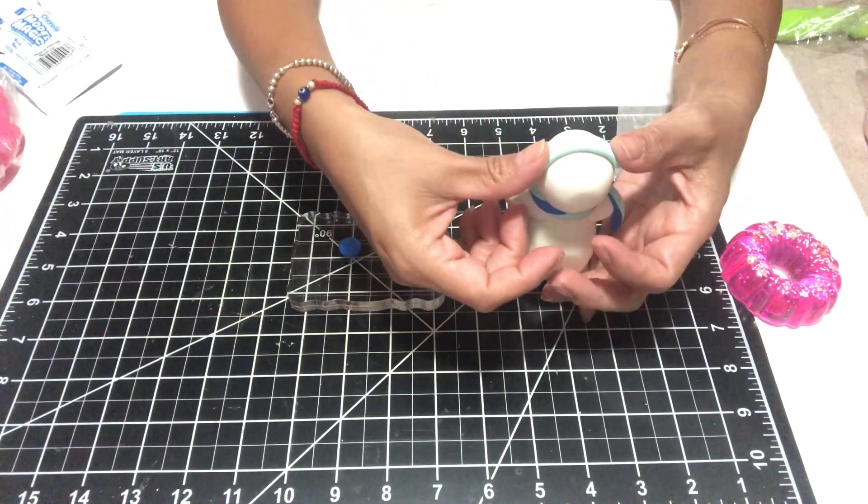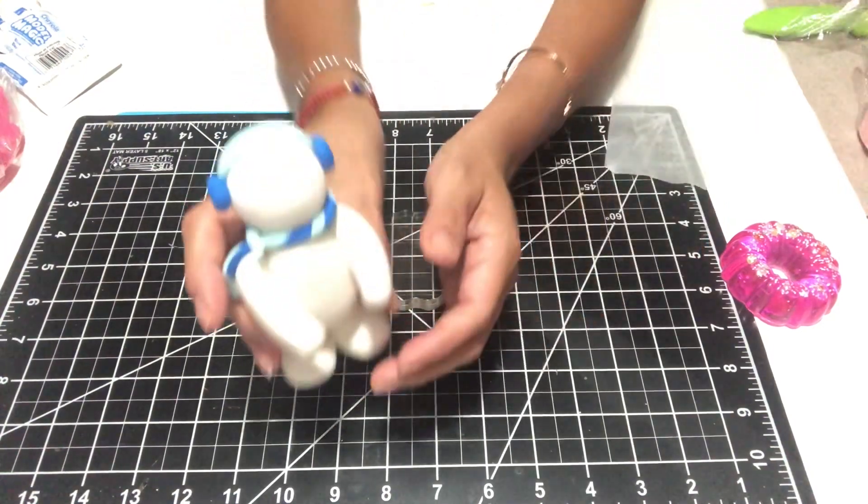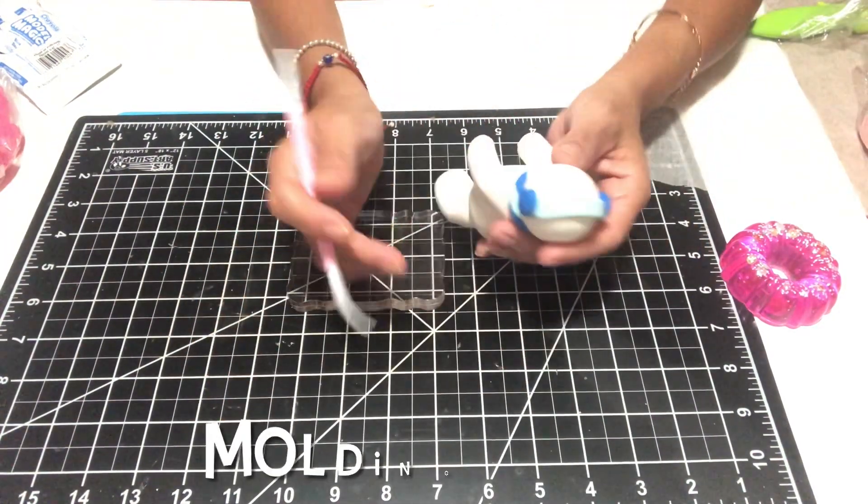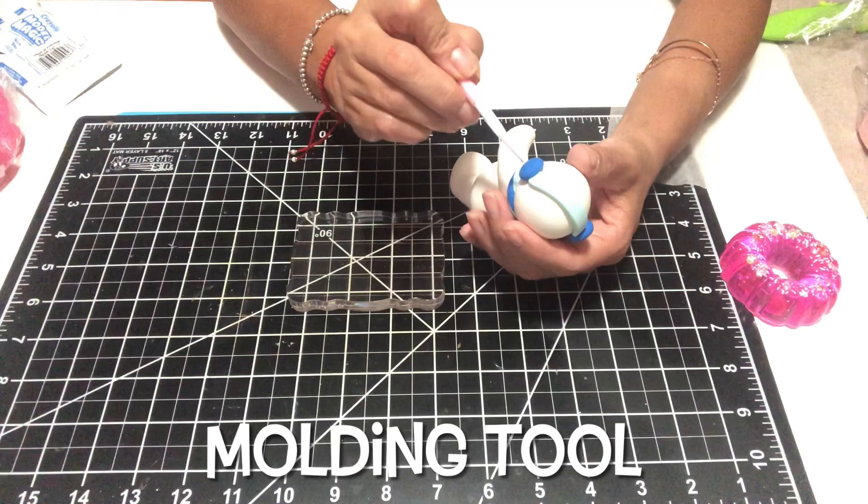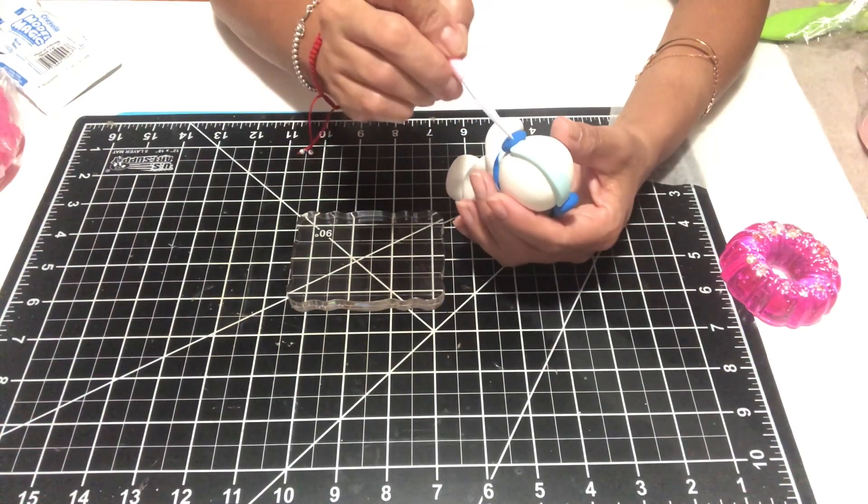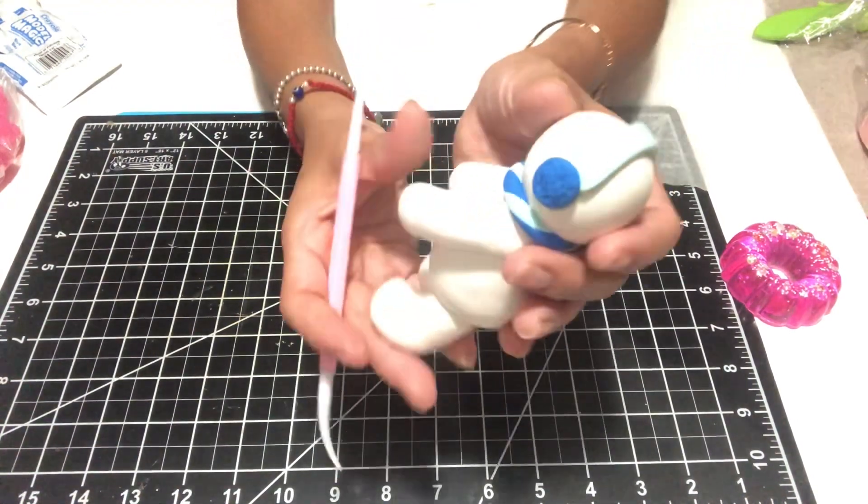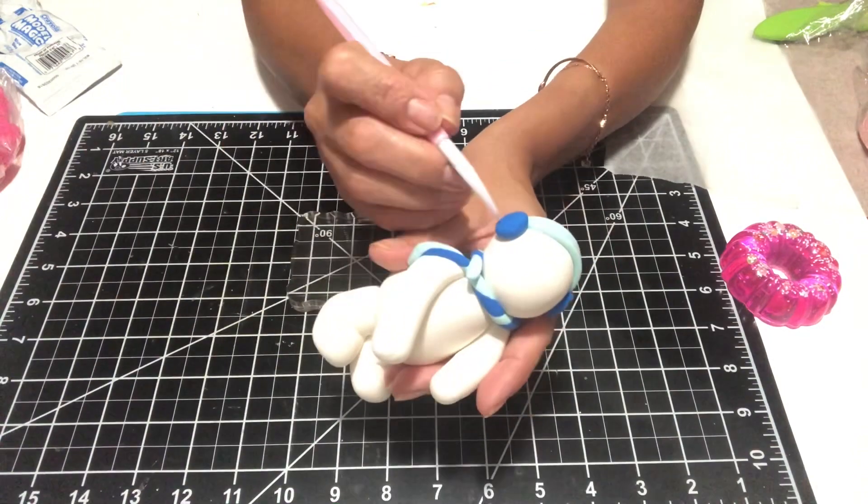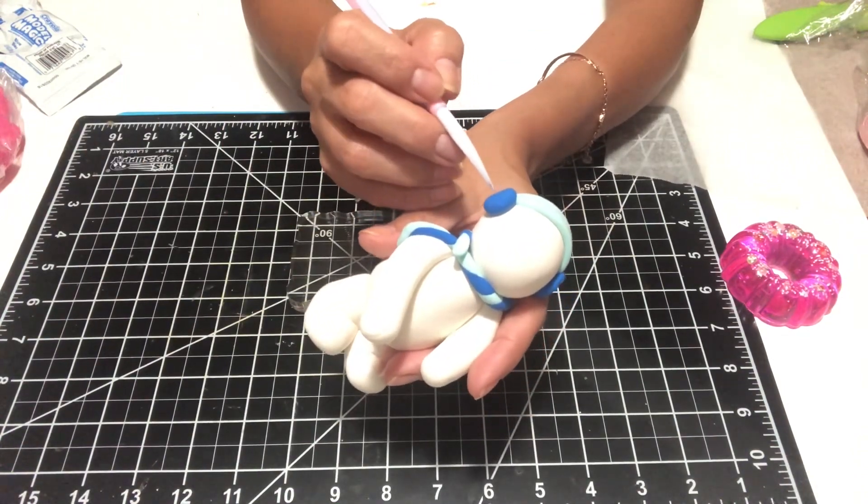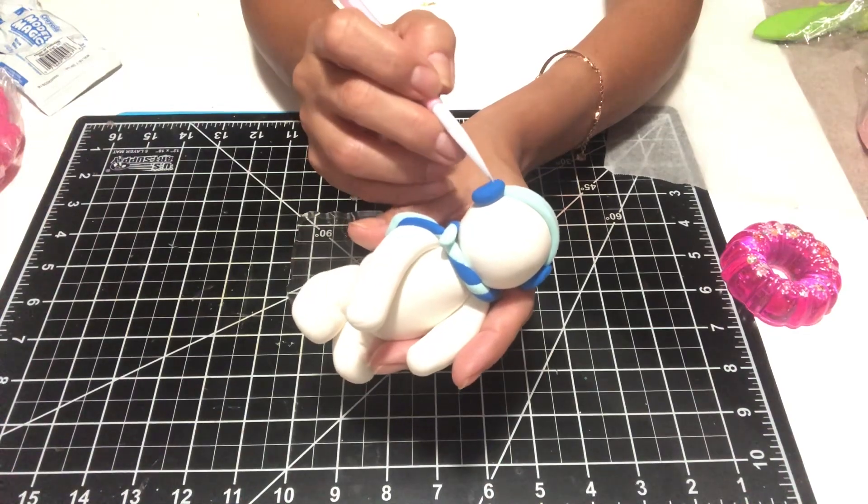Once he is dry, I add his little eyes, his nose, and that is it. Now regarding his earmuffs, here I'm using a little model tool to give him more of a definition, I guess, towards his little earmuffs.